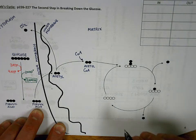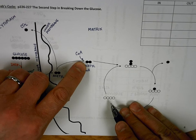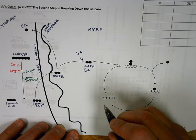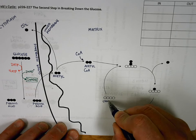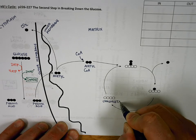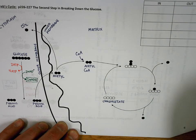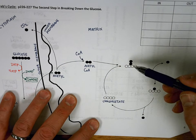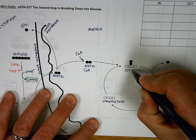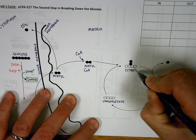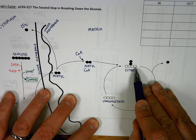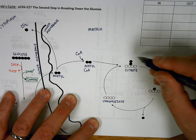Now what the coenzyme A is going to do is help this two-carbon acetyl connect with this four-carbon molecule down here called oxaloacetate. The oxaloacetate and the acetyl come together with the help of coenzyme A to make something called citrate, sometimes called citric acid. You can see the four oxaloacetate carbons and the two acetyl carbons for the six-carbon citrate.